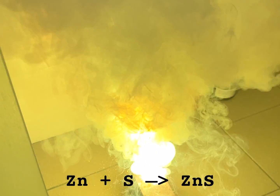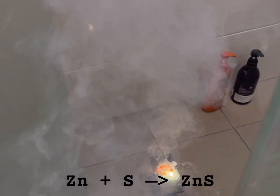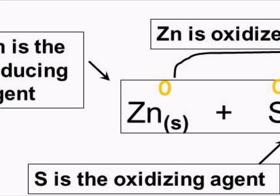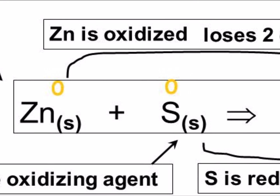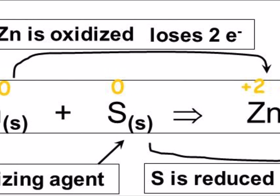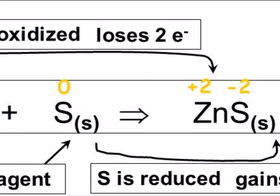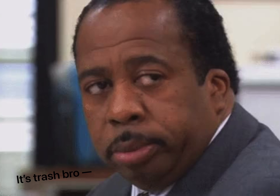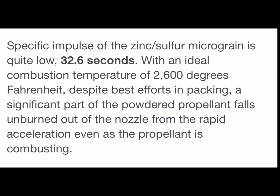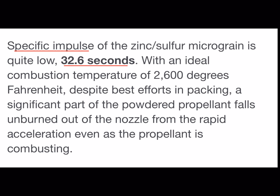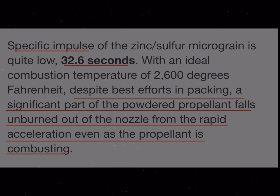In a reaction where there's no oxygen involved, the first definition of oxidation applies — for example, sulfur acts as an oxidizing agent since it gains electrons from zinc. However, I definitely wouldn't recommend using this reaction for rocketry; it's simply an unstable and undesirable propellant, with slow specific impulse and difficult grain manipulation.